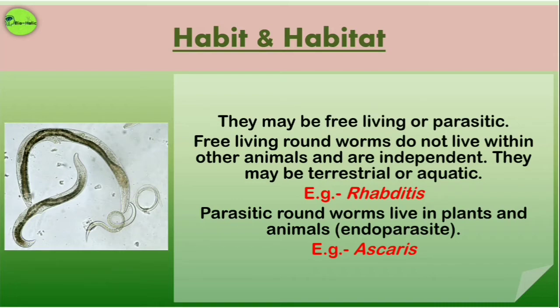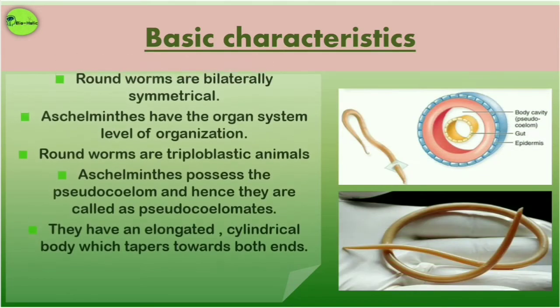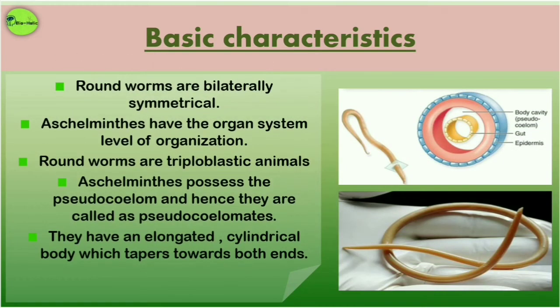The basic characteristics: roundworms are bilaterally symmetrical, and the Aschelminthes have the organ system level of organization.